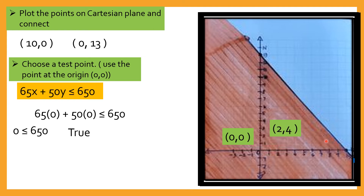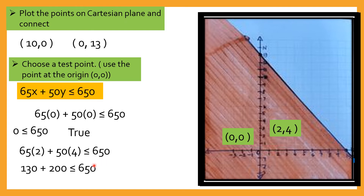Let's pick point (2, 4) — ang x natin ay 2, ang y natin ay 4 — bumili ka ng 2 kilos of oranges and 4 kilos of apples. Tingnan natin kung magiging true ang statement natin. So 65 times 2 plus 50 times 4 is less than or equal to 650. That is 130 plus 200 is less than 650, which is 320. The total amount you're going to pay is 320 for 2 kilos of oranges and 4 kilos of apples, which is less than 650.